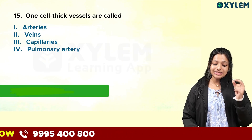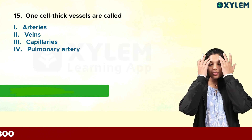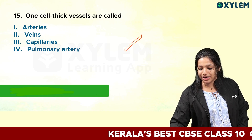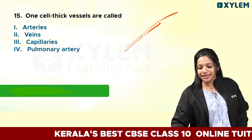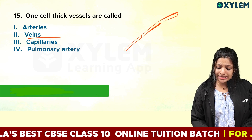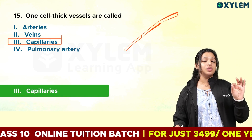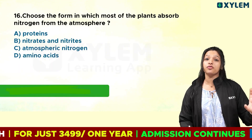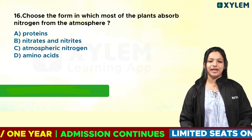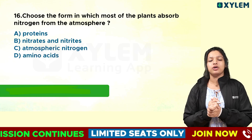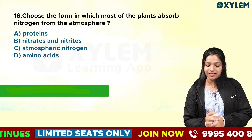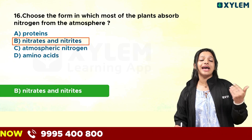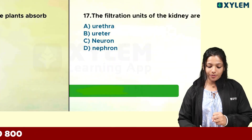One cell thick vessels are called what? The options are arteries, veins, or capillaries. The answer is capillaries — they are the one cell thick vessels. Next question: choose the form in which most plants absorb nitrogen from the atmosphere. Most plants absorb nitrogen in the form of nitrates and nitrites.